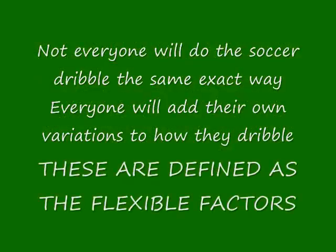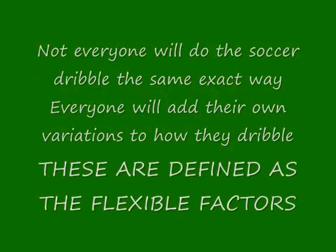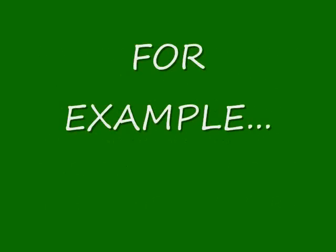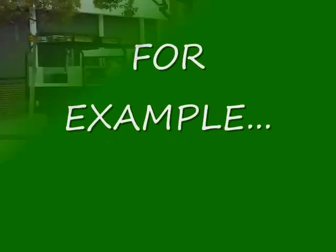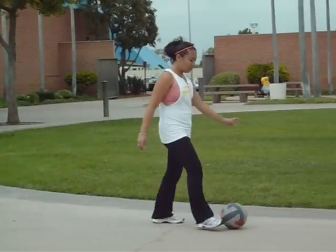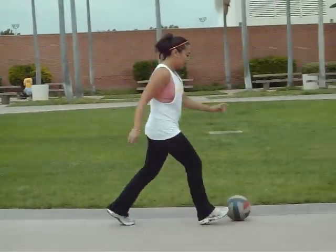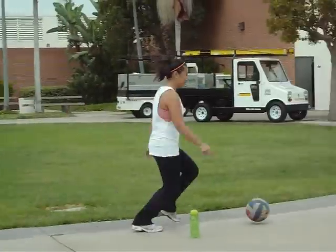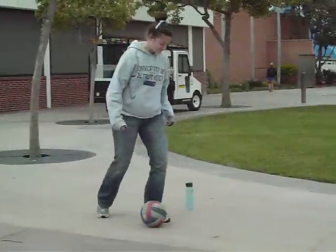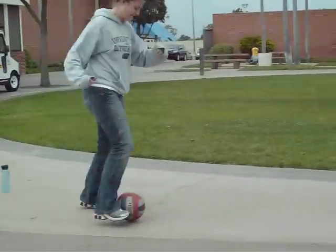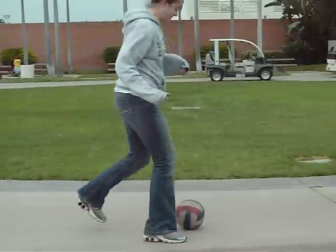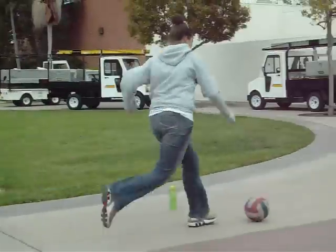Flexible factors are the movements that can vary across individuals performing the same action. For example, here we have my partner Jess performing the action, and you can see she doesn't do it exactly like Bree. And even Bree can't perform the same action the same way twice.